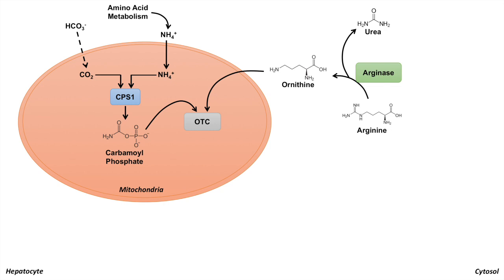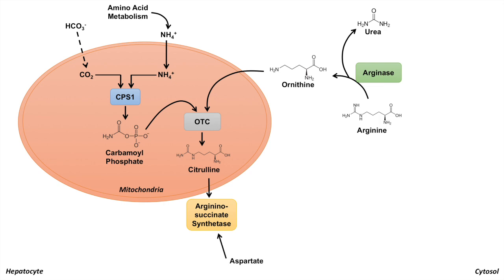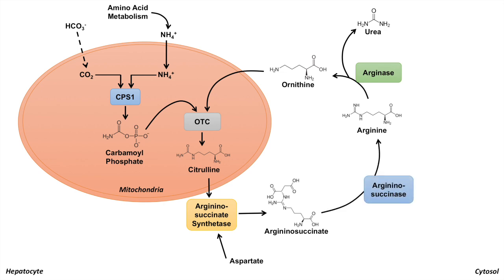The carbamoyl phosphate will then be added to ornithine by an enzyme known as ornithine transcarbamoylase — OTC. OTC will take ornithine and carbamoyl phosphate and combine them to get citrulline, another amino acid. Citrulline will then be transported out of the mitochondria and acted on by argininosuccinate synthetase, which also needs aspartate, to produce argininosuccinate.